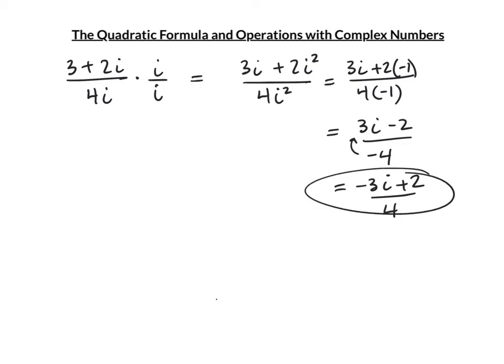For a messy fraction like (5 + 3i)/(2 - 7i), use the conjugate to rationalize the denominator. The conjugate creates a difference of squares — (x + 5)(x - 5) = x² - 25 — the middle term drops out. This eliminates the i in the denominator.